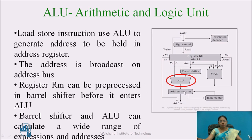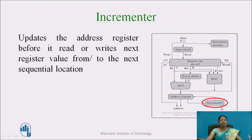Register Rm can be pre-processed in the barrel shifter, and the barrel shifter together with the ALU can calculate a wide range of addresses and expressions. The next block is the incrementer. Since we need to access different addresses each time, the address must be updated before reading or writing the next sequential memory location, and that job is done by the incrementer. These are the different elements of the data flow model of the ARM core.